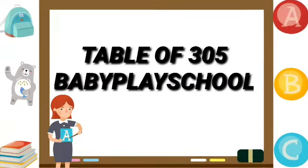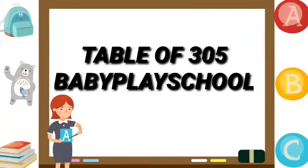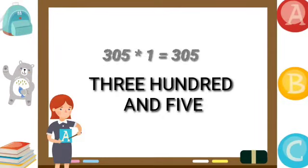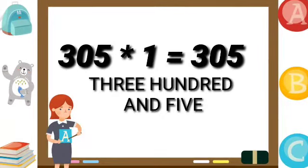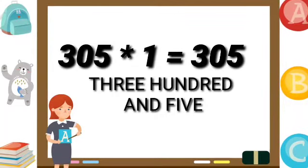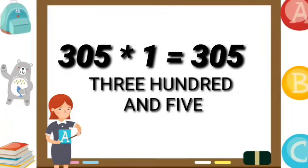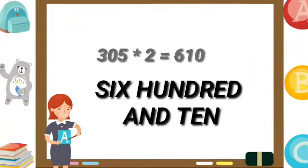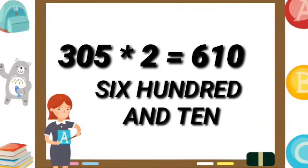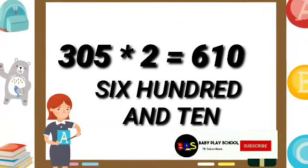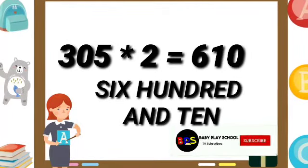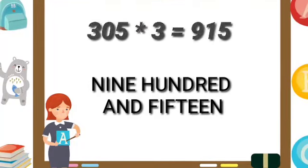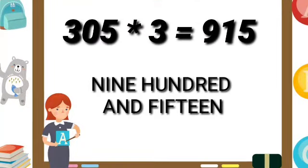Welcome to the table of 305. 305 ones are 305. 305 twos are 610. 305 threes are 915.